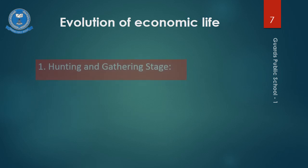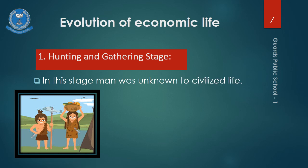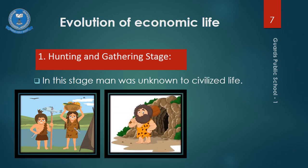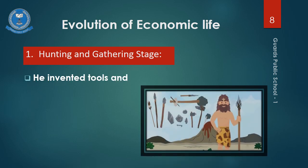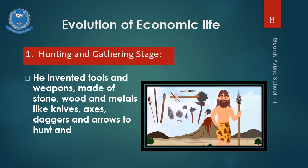In the beginning, man was unknown to civilized life. He lived in caves and used to eat leaves and fruits. Then he learnt the use of fire and metal. He invented tools and weapons made of stone, wood and metals like hammers, axes, daggers, knives and arrows to hunt and kill the animals. Men experienced that sometimes he had to live without food as his hunted animals and fish could not be used due to unfavorable conditions, as meat cannot be stored for a longer period. So he started gathering the animals and storing them alive. This is called the hunting and gathering stage.